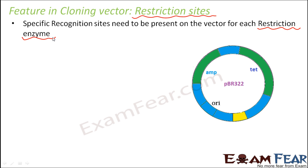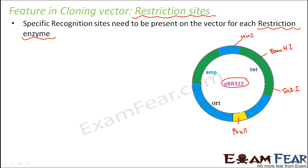Let us look at PBR322. As you can see, this portion is for the origin of replication. Specific sequences of DNA are reserved for a set of restriction enzymes. This region here is for the enzyme PVU2; this region is for the enzyme SalI; this region is for BamHI; this portion is for another restriction enzyme called HindIII; and this region here is for EcoRI.